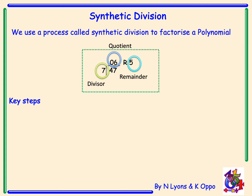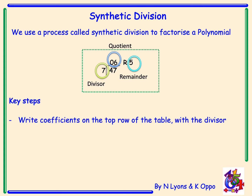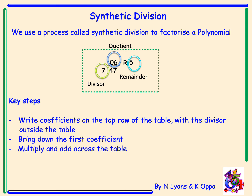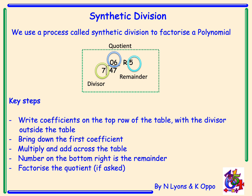Key steps when doing synthetic division: we write the coefficients on the top row of our table with the divisor on the outside. We bring down the first coefficient, then multiply and add across the table. The number in the bottom right is our remainder. We may need to factorise the quotient, and we may also need to solve. This will become much clearer with an example.